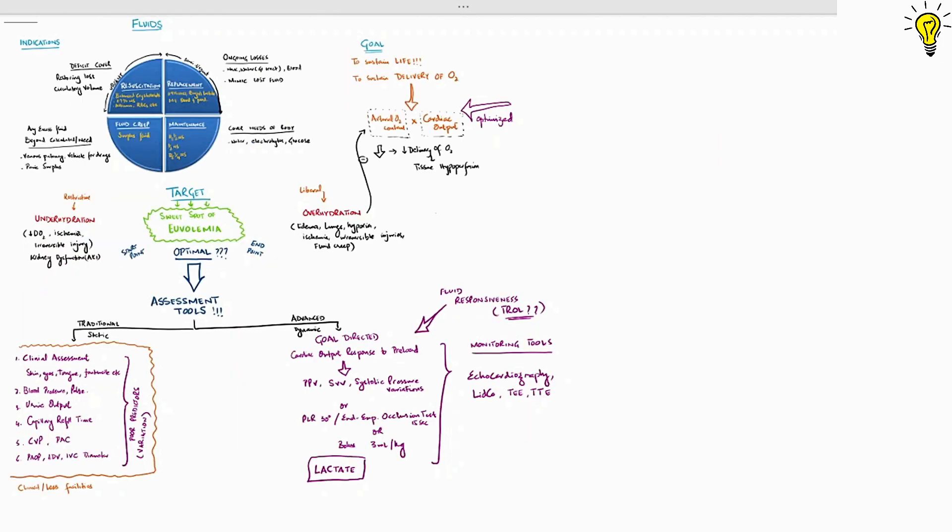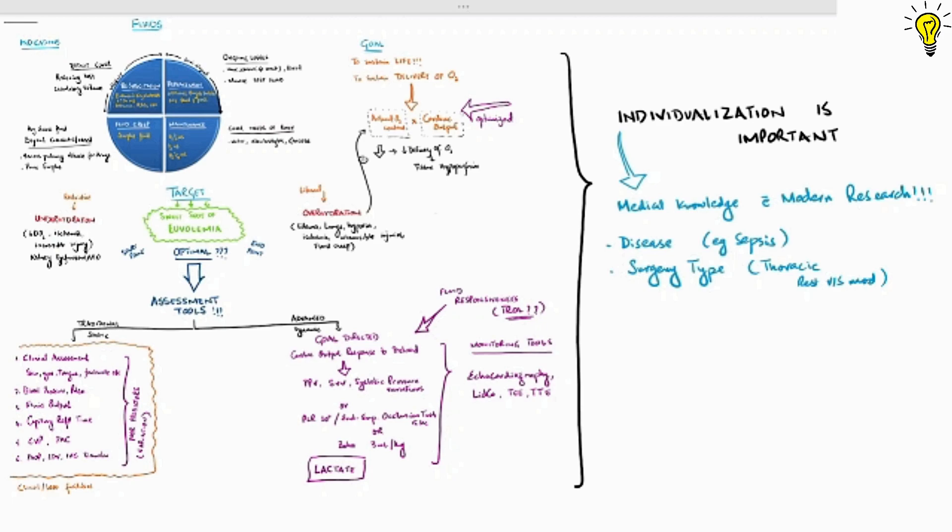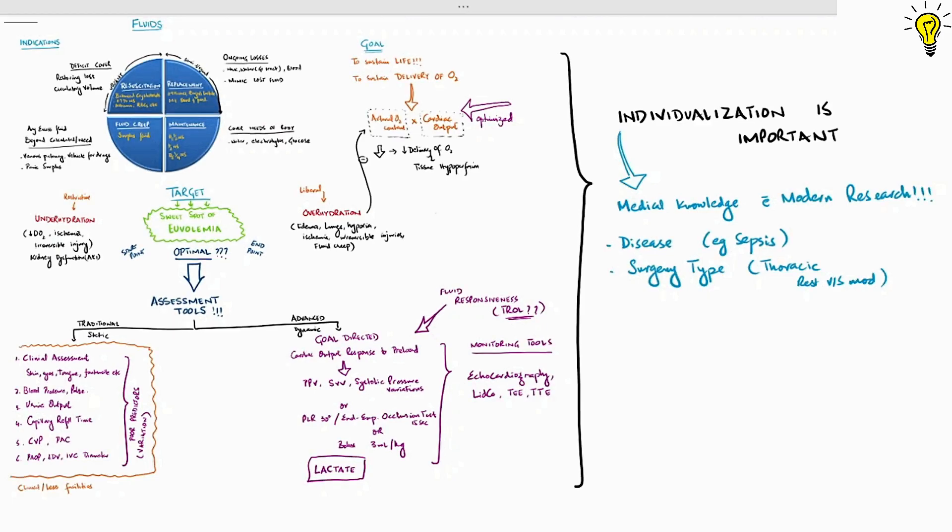Always remember individualizing with case-to-case variation holds the key to good fluid therapy. This means good medical knowledge about the disease combined with latest protocols and research. For example, resuscitation for trauma sepsis protocols are different. Similarly, type of surgery is important, like restrictive fluid strategy for thoracic cases, but latest research says it can adversely affect the kidneys.